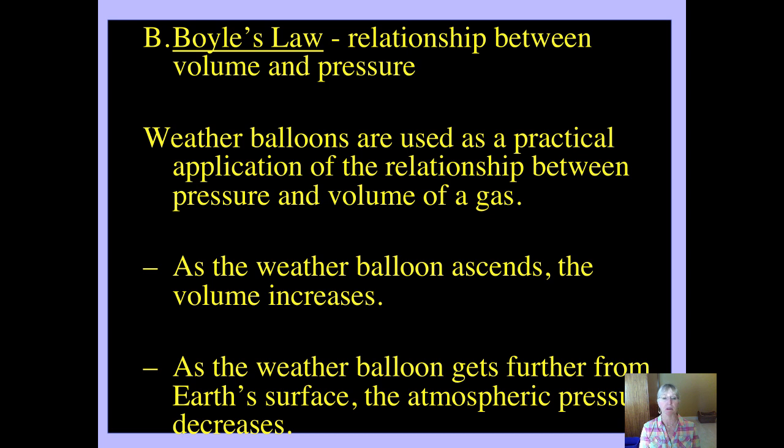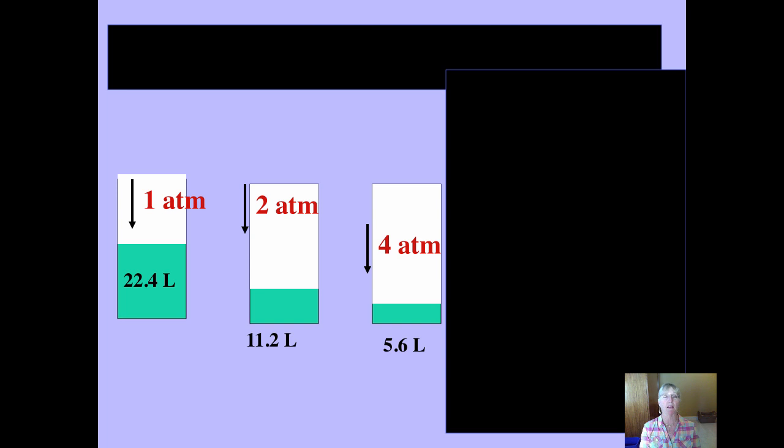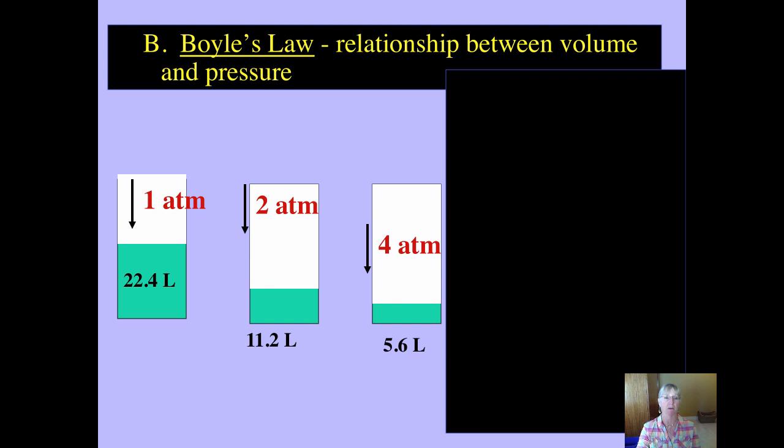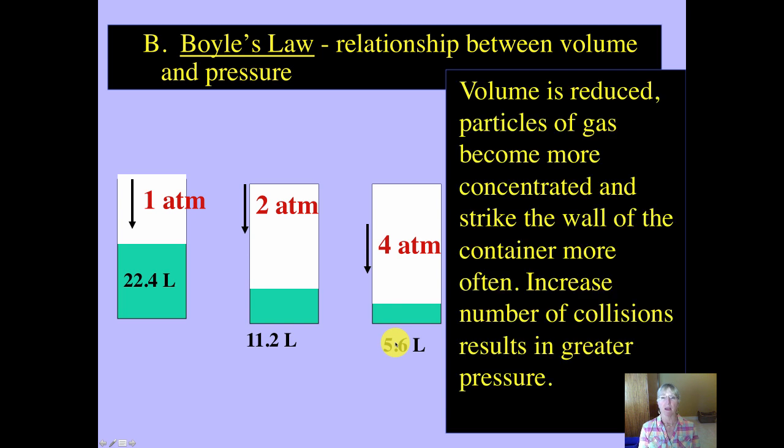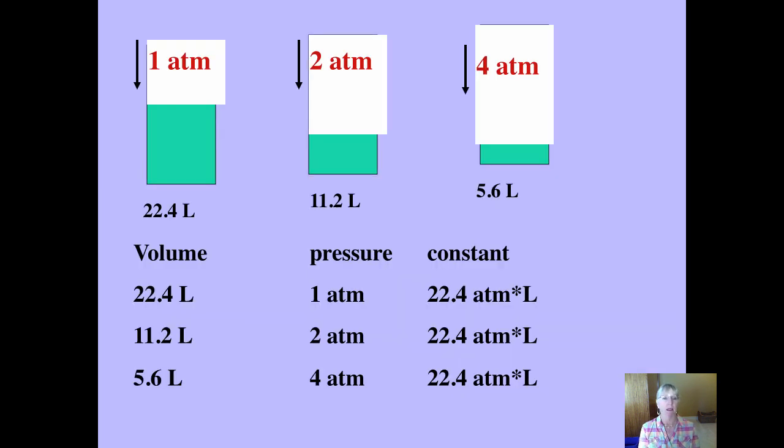So as weather balloons are released from the surface of the planet, atmospheric pressure is less and less on them, and as they rise up into the atmosphere the weather balloon will begin to expand. Here you can see that if we start with 22.4 liters of a gas, if I double the atmospheric pressure then I cut the volume in half. Double the pressure again, cut the volume in half. So Boyle's law is showing that there's an inverse relationship between greater pressure and less volume. Here's that again shown for you in a different graphical form.